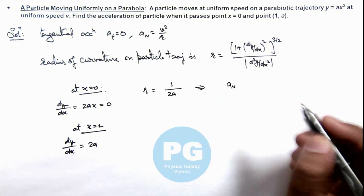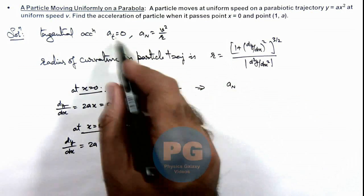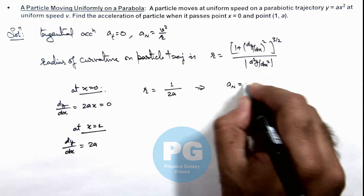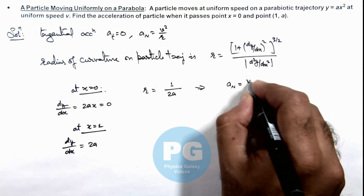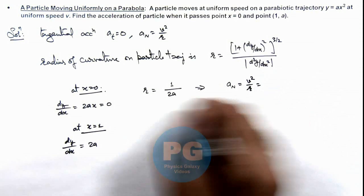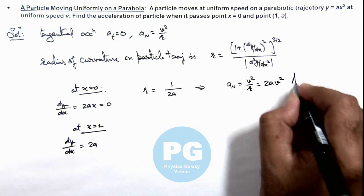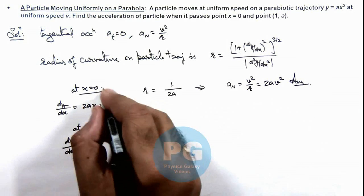The normal acceleration of the particle, which is the only acceleration as tangential acceleration is zero, is v²/r. The value of r is 1/(2a), so this is 2av². That is the result of this problem for x = 0.